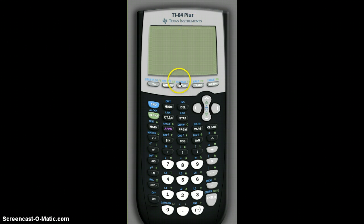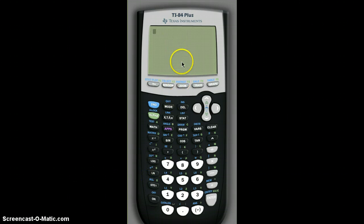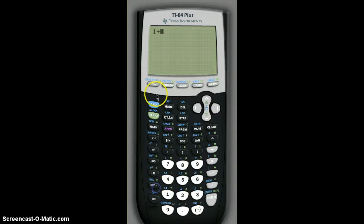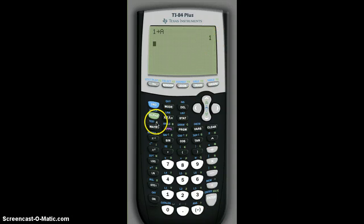So say we want to store one to A. So I'm going to go one stored to A. Hit enter, and it'll give me one. Now, when I type A again, it'll show me that A is equal to one.